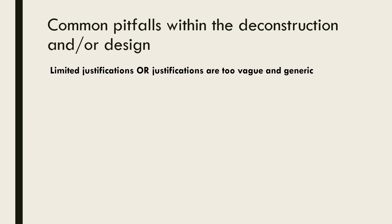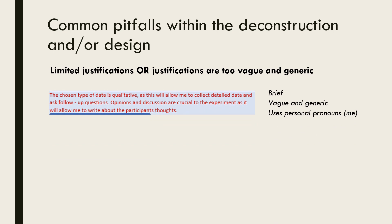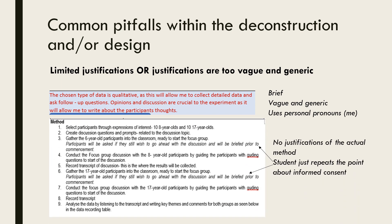The next common pitfall is a lack of justifications, or the justifications are too generic and not in context of the question. For example, this justification taken from a deconstruction is very brief and generic — it doesn't explain why this design type is the most appropriate one to use for their specific context and question. Furthermore, it uses personal pronouns like 'me'. This method contains no justifications in relation to how the procedure is being performed; all the student has done is repeat a point about gaining informed consent. The purpose of justifications is to demonstrate your thinking and decision-making process throughout the deconstruction and design, specifically in context to the investigation you are planning to undertake.